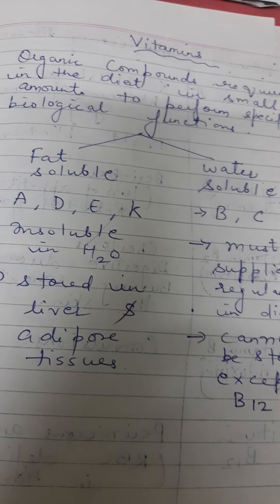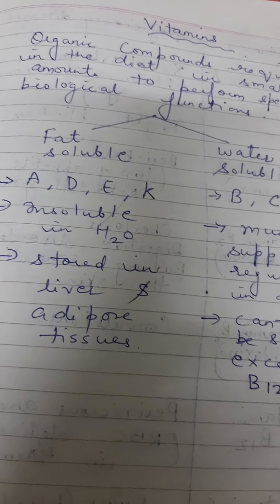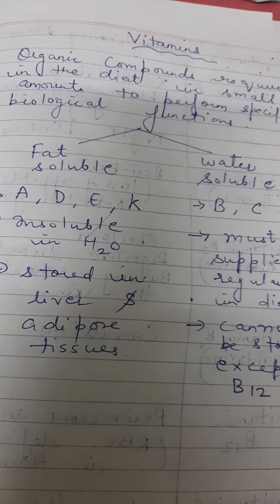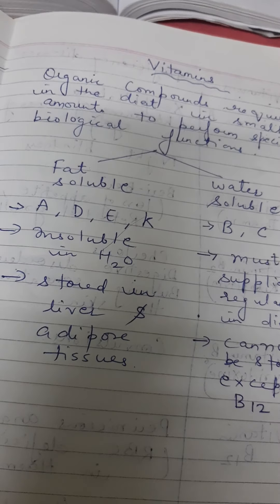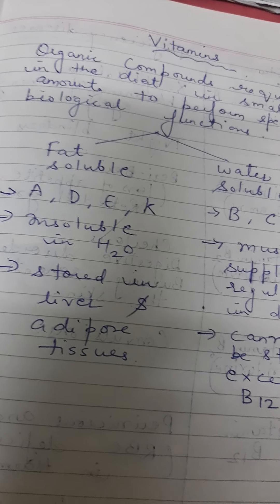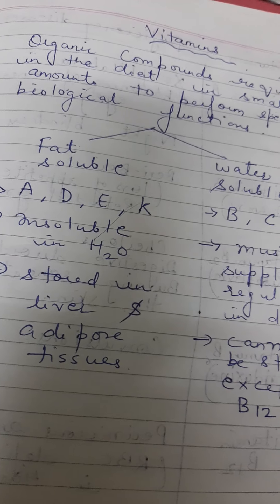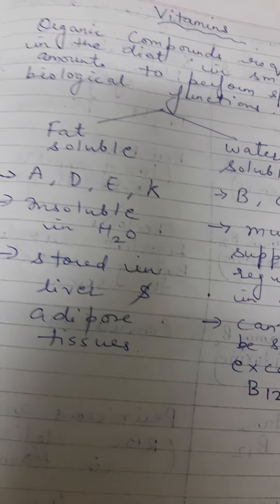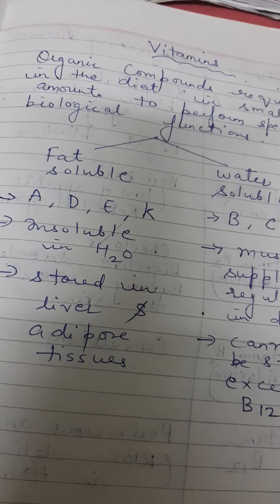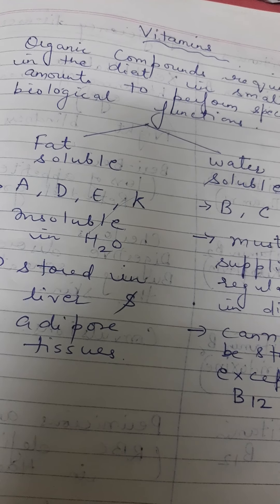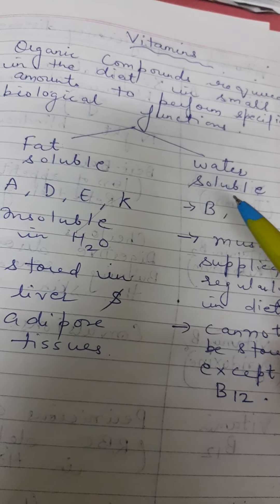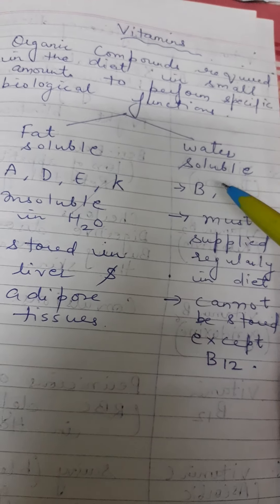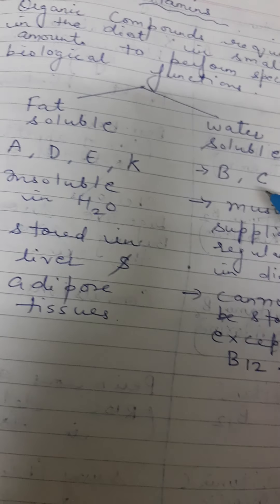Hello students, welcome to Chemistry GAN channel. Our today's topic is vitamins. Vitamins are organic compounds that are required in the diet for our biological functions. Basically there are two categories in vitamins: fat-soluble vitamins and water-soluble vitamins. Water-soluble vitamins include B and C.